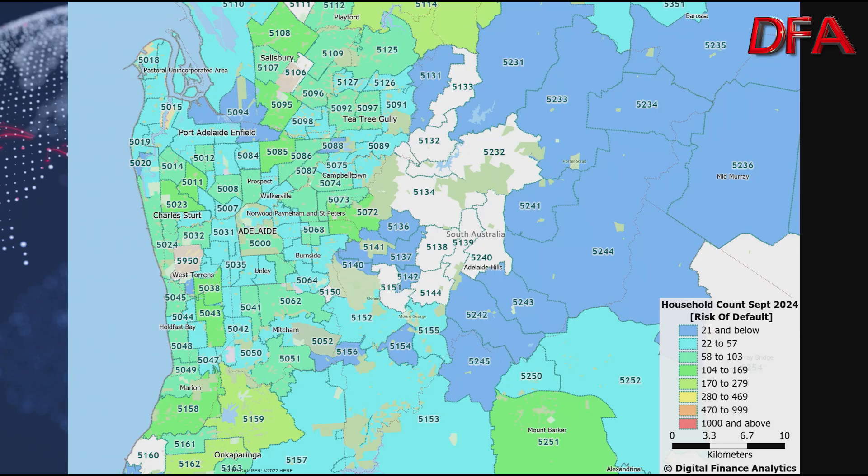In Adelaide, the overall counts are somewhat lower because the population density is somewhat lower. But there are some areas like Mount Barker that stand out, as well as areas in postcodes 5108 and 5114.